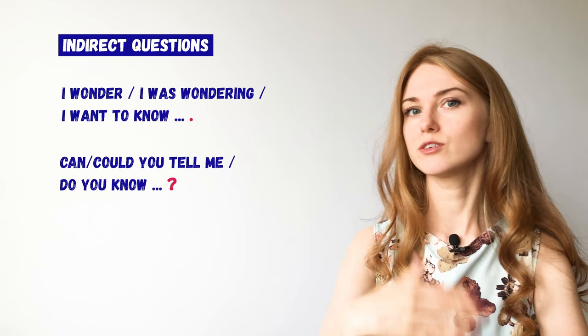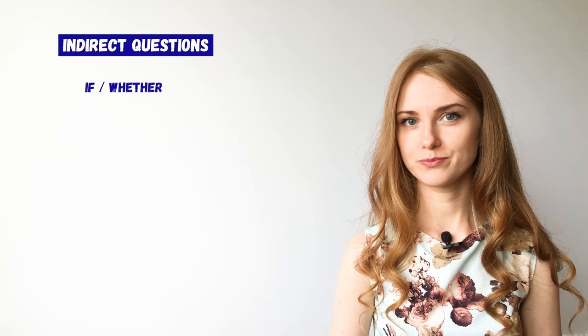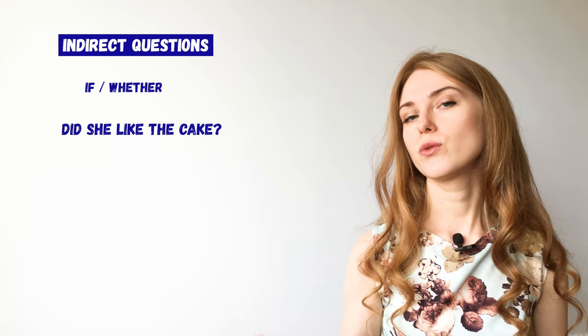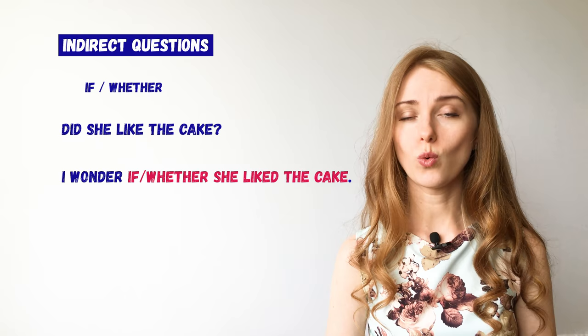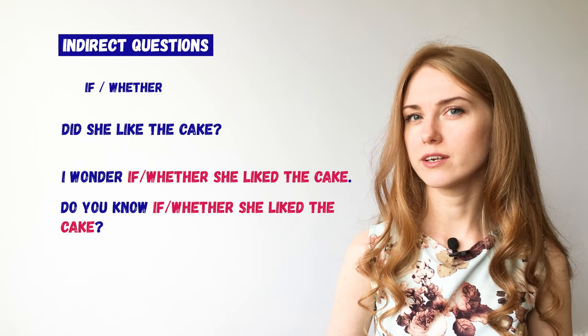If there is no question word in your indirect question, we have to add 'if' or 'whether' before it. For example: 'Did you like the cake?' is a yes-no question with no question word. So we make an indirect question this way: 'I wonder if she liked the cake' or 'I wonder whether she liked the cake'. 'Do you know if she liked the cake?' or 'Do you know whether she liked the cake?'